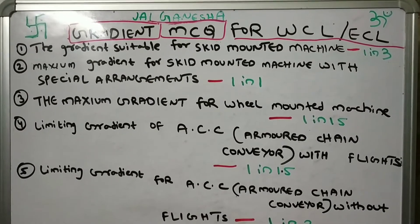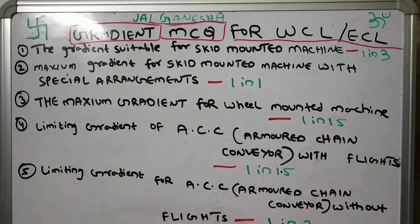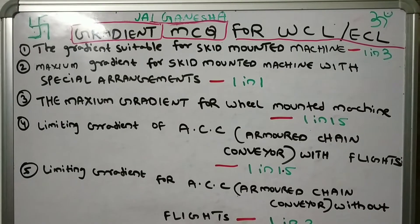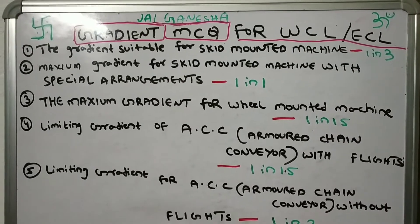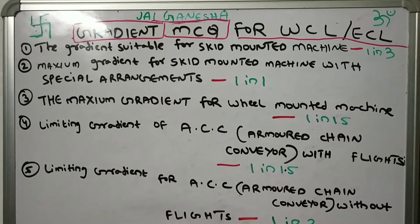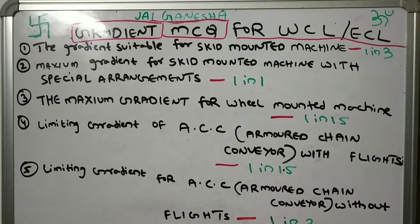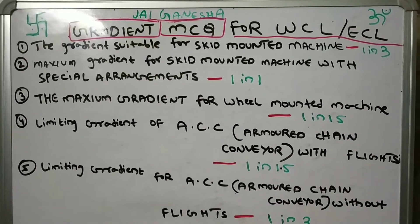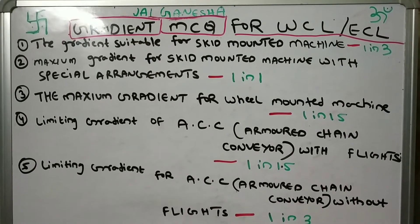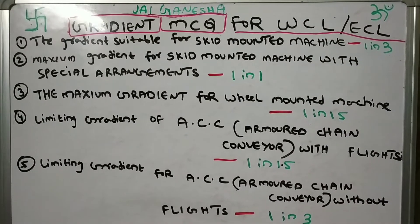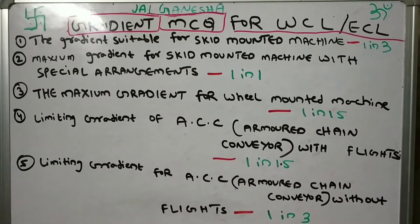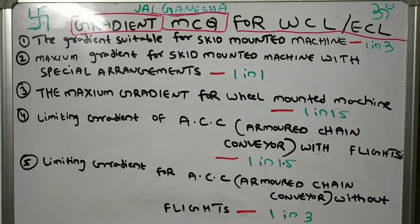Fourth question: What is the big gradient of DCC, or 10 in 15 flights? The answer is 2 in 15.